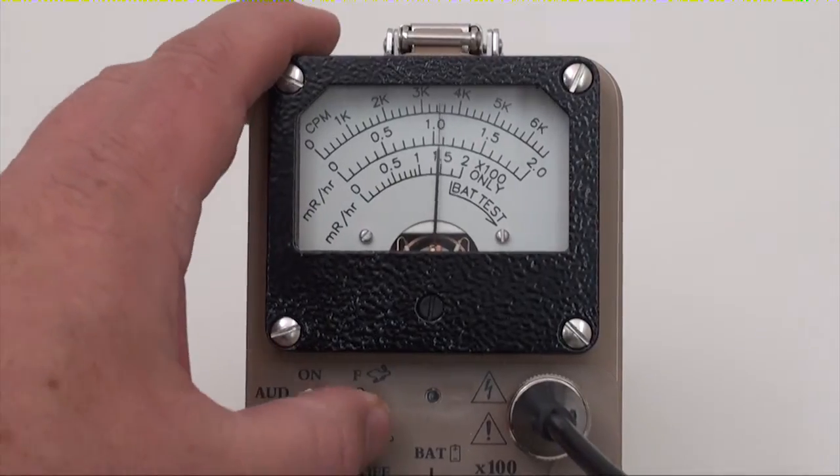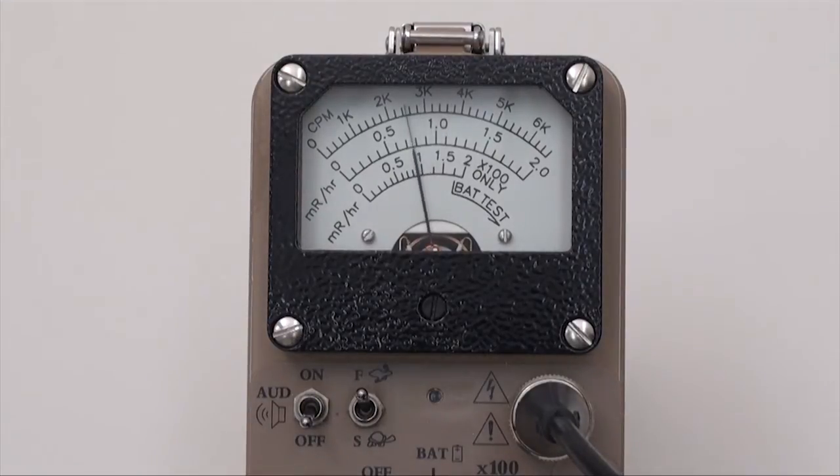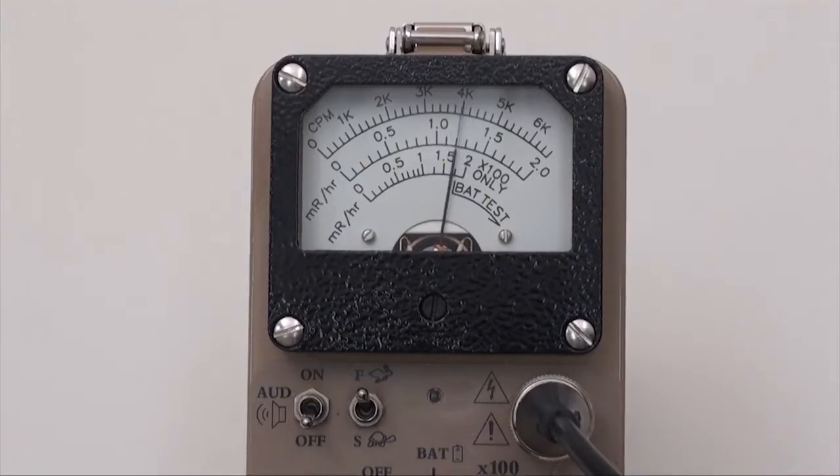The fast-slow switch sets the time constant. In the fast position, 90% of the true reading is attained within just 4 seconds, allowing for a quick response to sudden changes.